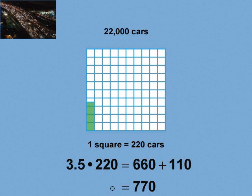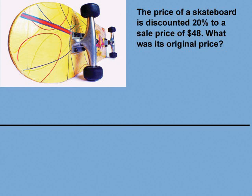Let's look at a final example. The price of a skateboard is discounted 20% to a sale price of $48. What was its original price? This is an example of having the percent and the part, and you're looking to calculate the whole. You could set up an equation to solve it, but we can also use a visual model for this type of percent problem.